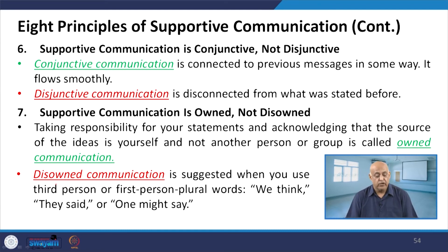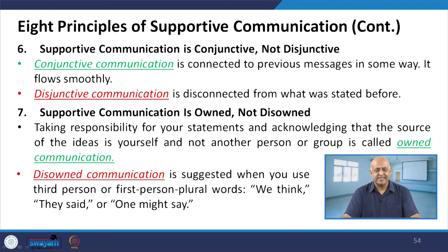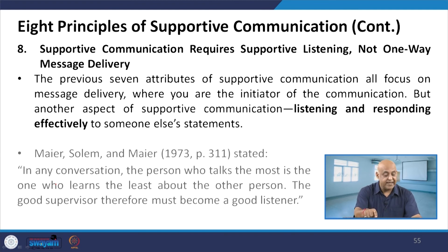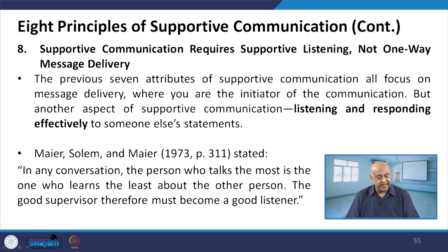The sixth principle is that supportive communication is conjunctive, not disjunctive — it is connected to previous messages and flows smoothly. The seventh principle is that supportive communication is owned, not disowned — take responsibility for the statements you have given and own your ideas rather than attributing them to another person or group. Leaders often take ownership in success but leave failure to others — that is to be avoided. Use first-person or first-person plural words: 'I think,' 'we think,' or 'our task.' The eighth principle is that supportive communication requires supportive listening, not one-way message delivery. As Mel Solman and Meyer stated: in any conversation, the person who talks the most learns the least about the other person, and a good supervisor must become a good listener.